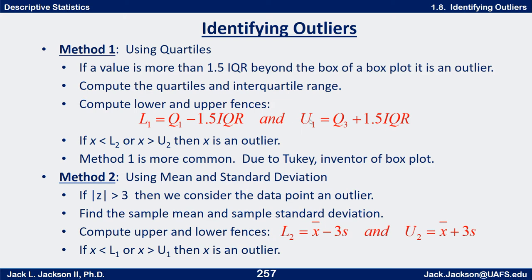Similarly, the upper fence U1 is Q3 plus 1.5 times the interquartile range — the same distance above the third quartile. An alternate method uses the mean and standard deviation: if the absolute value of the z-score is greater than 3, we consider the data point an outlier — further than 3 standard deviations above or below the mean. The lower fence for method two is X-bar minus 3 times S, and the upper fence is X-bar plus 3 times S. If you're below L or above U, you have an outlier.